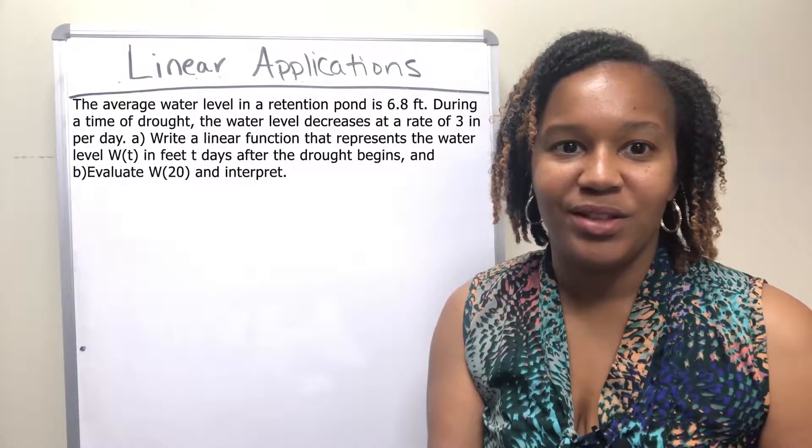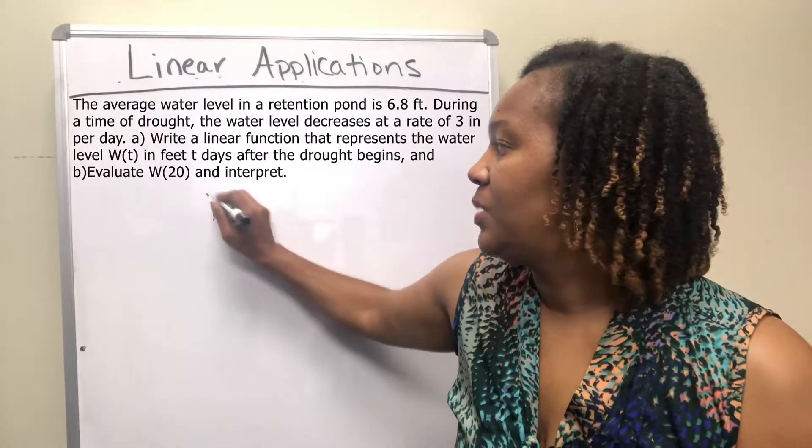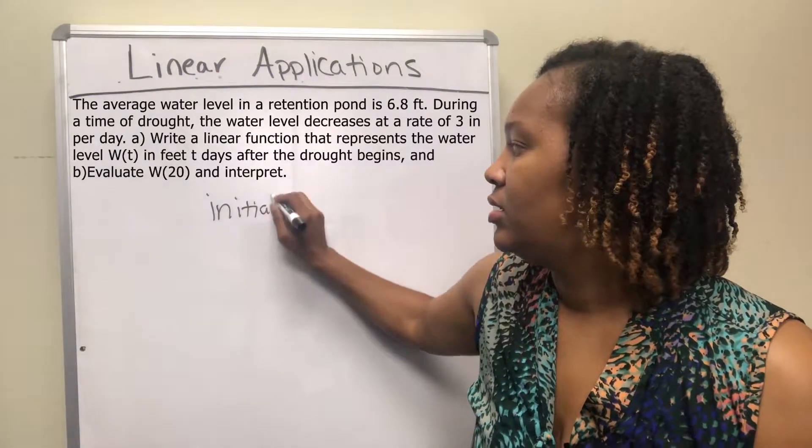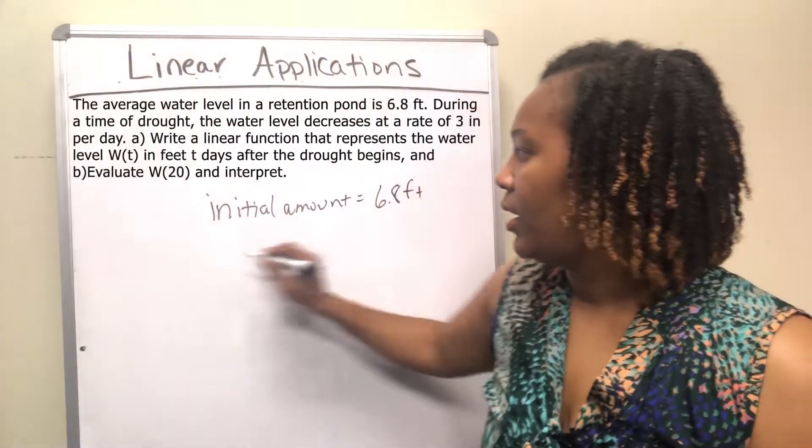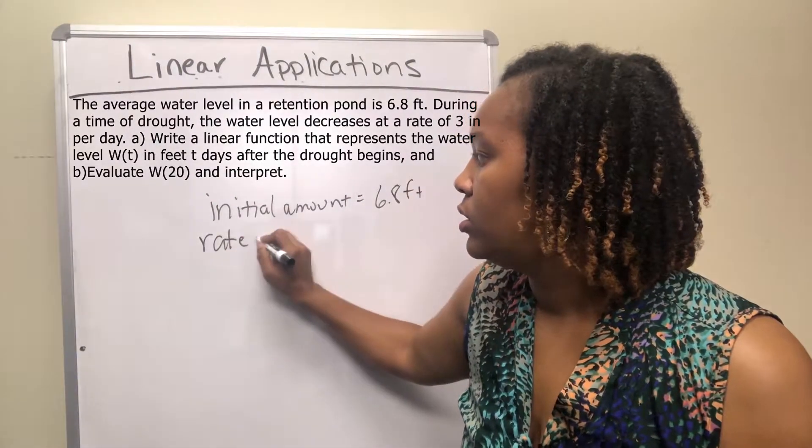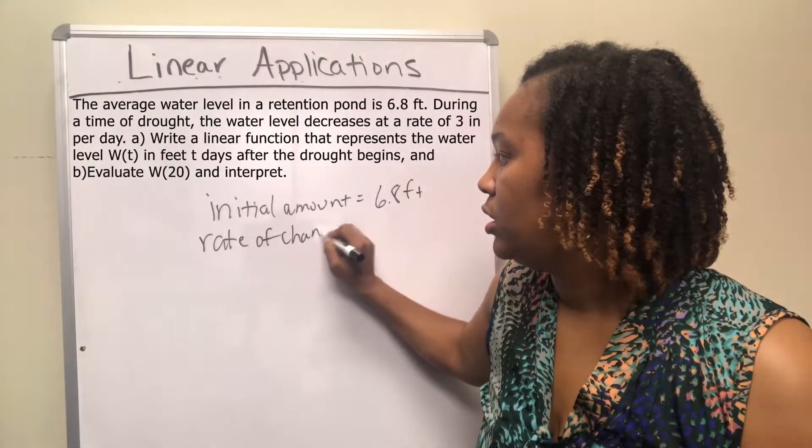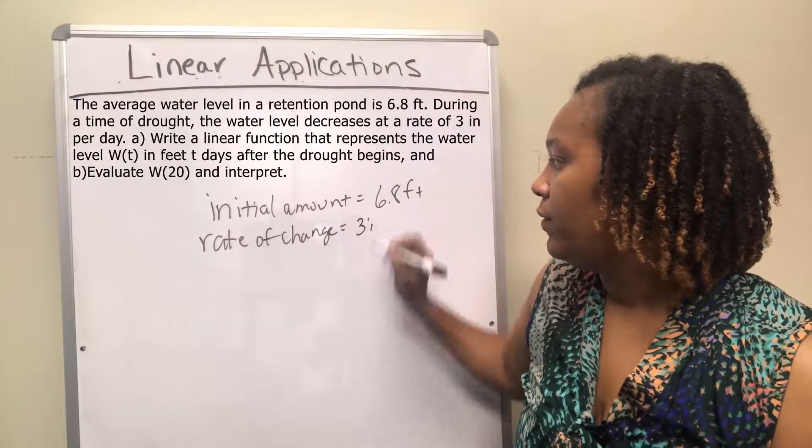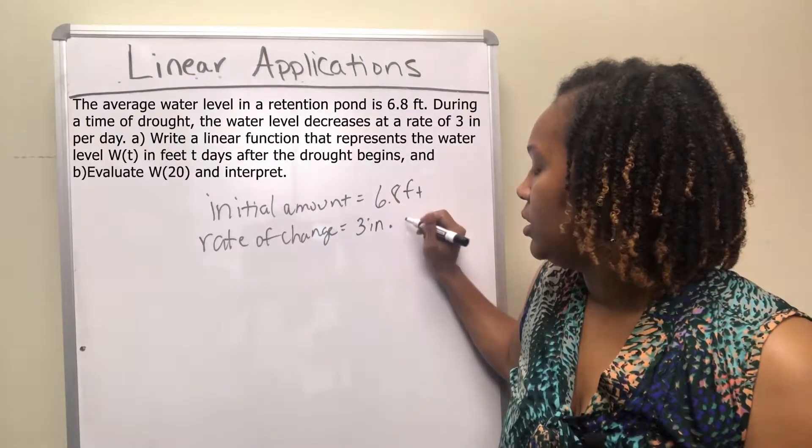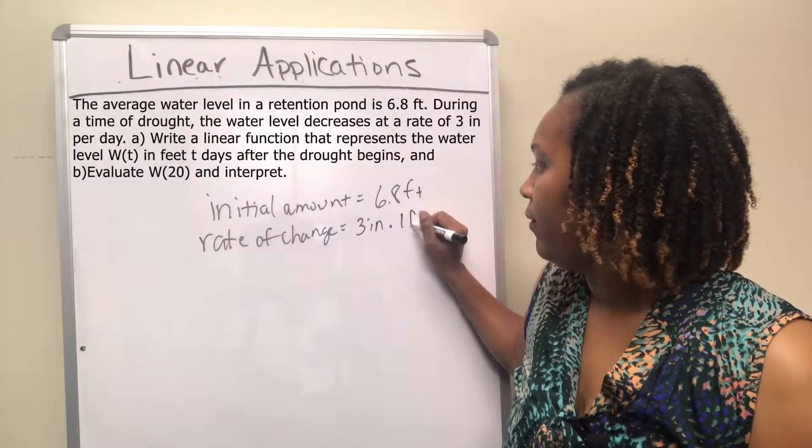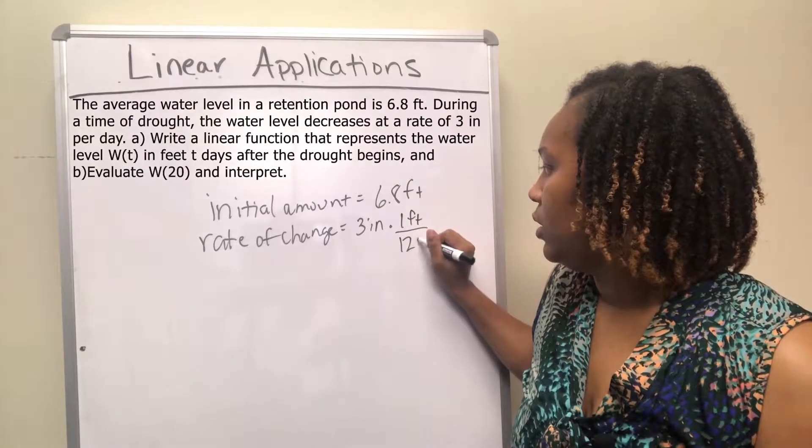So take a minute, pause it, and see if you can write the equation for this. The initial amount is 6.8 feet, and the rate of change is 3 inches. And if you want to convert inches to feet, then you would say 1 foot is equal to 12 inches.